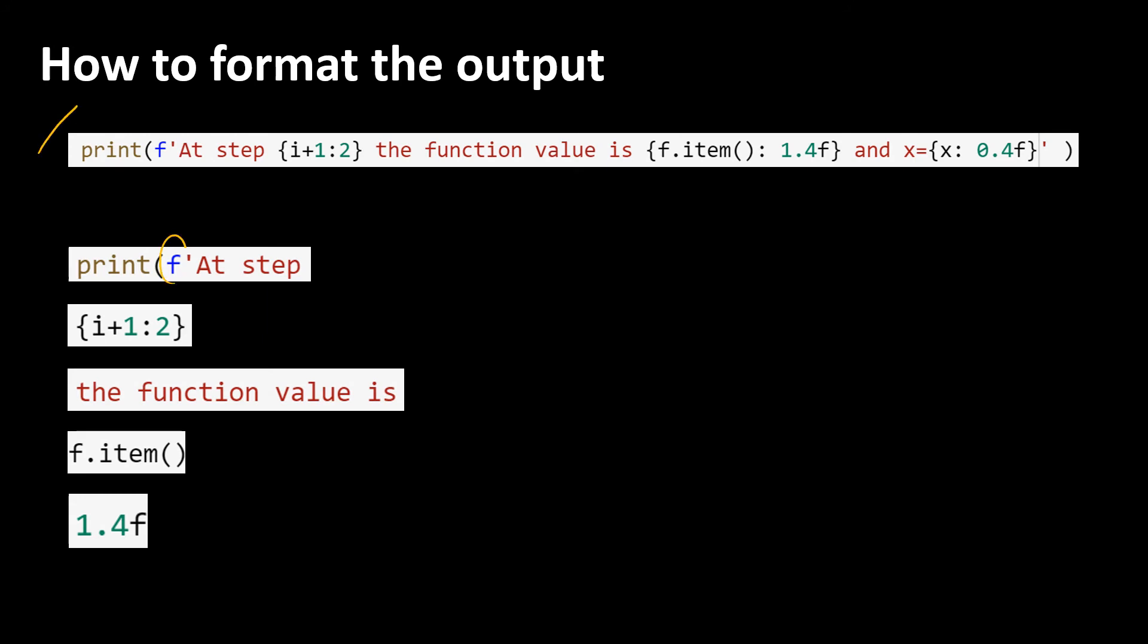Here the first f means format the stream. Everything that is in the curly braces, I mean i plus 1 is a variable. If we put colon here inside curly braces, it means that the number of spaces that the variable i plus 1 can occupy in the print statement is 2. Whatever that is not in the curly braces would be a plain string like the function value is.